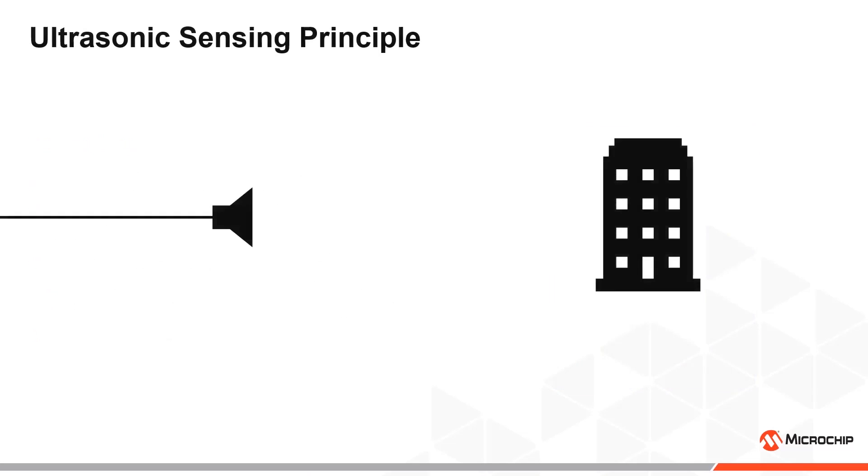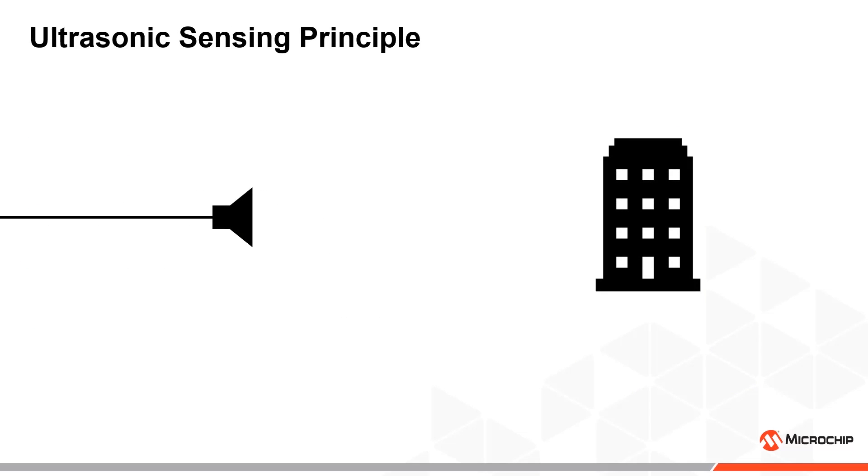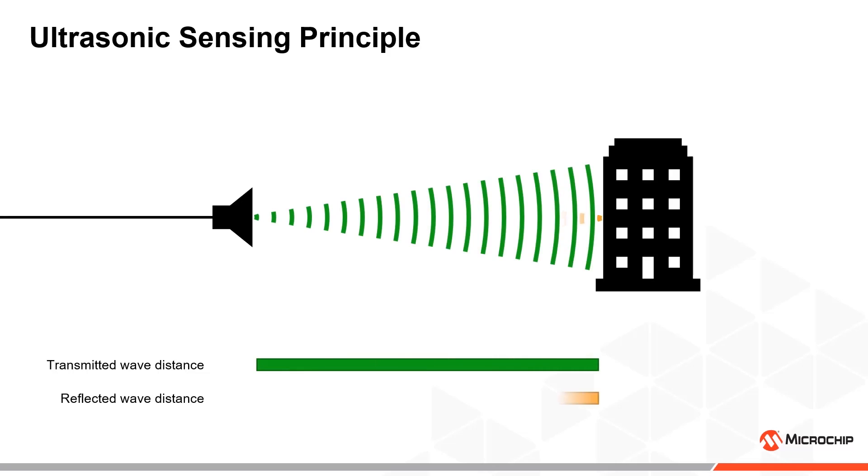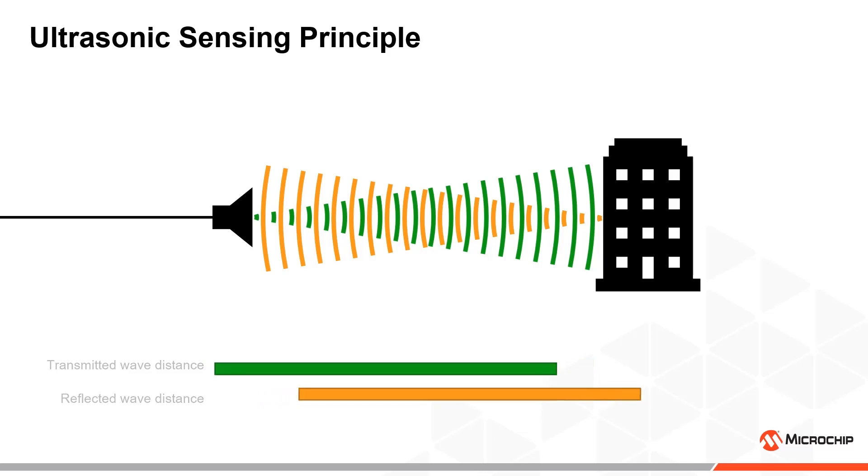Let us start by explaining the measurement principle. An ultrasonic pulse is produced that propagates through the air. When it hits an object or a wall it is partially reflected back towards the sensor. The distance can then be calculated as a product of the travel time of the pulse and the sound velocity.